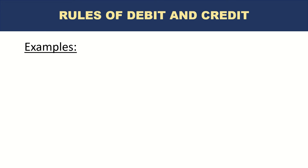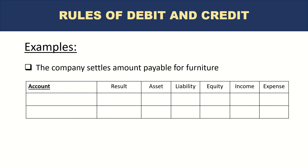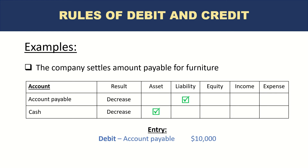The company now settles the amount payable for furniture. We recorded the liability last time; now the company has to settle that amount. The accounts impacted are accounts payable and cash. The accounts payable that was previously credited is now reversed — it's decreasing back to zero. Cash is also decreasing because we are paying out $10,000. Accounts payable is a liability — liability decreasing is a debit. Cash is an asset — asset decreasing is a credit. So the entry is: debit accounts payable $10,000, credit cash $10,000.